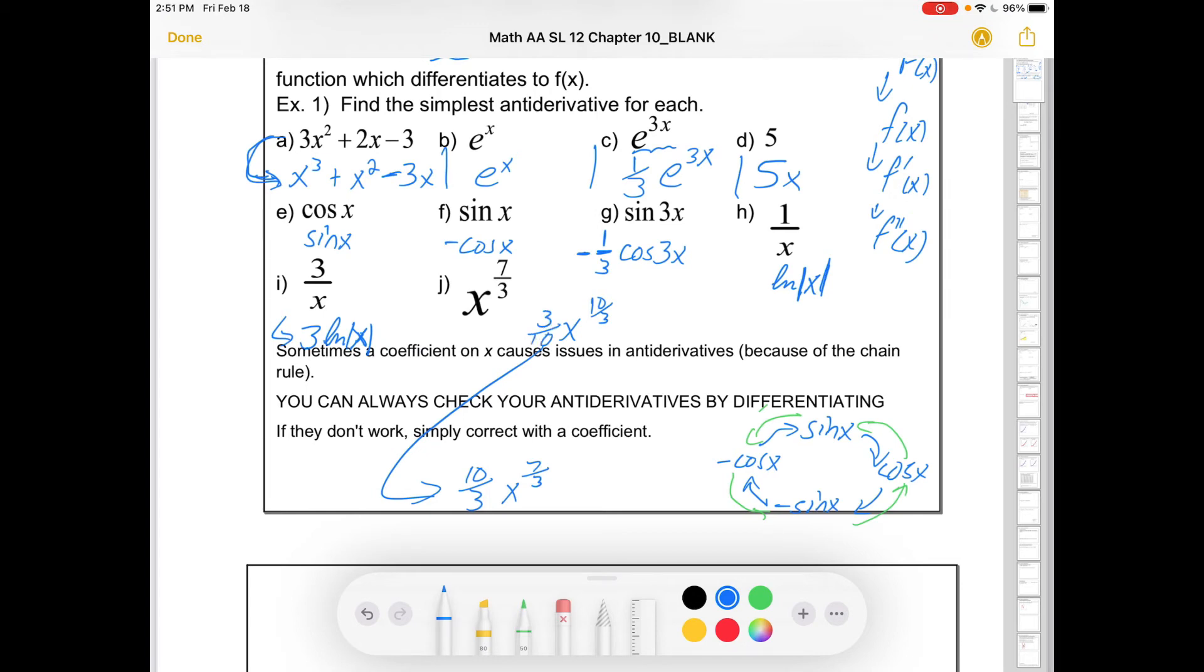But it's too big by a factor of 10 thirds. So how do we deal with that? We fight it by putting a 3 tenths out front. So as a rule, essentially, power goes up by 1 and the flip of the new power comes down front. That is very similar to our power rule when we had derivatives. But now we're going in the opposite direction.